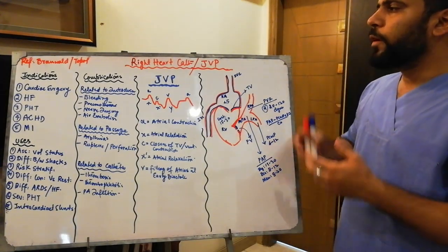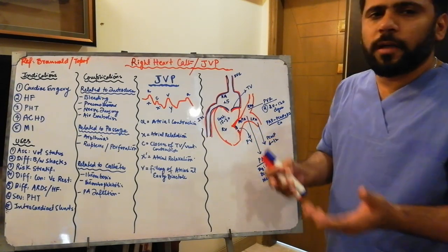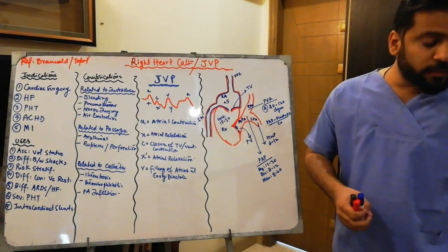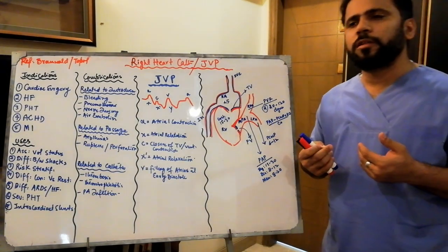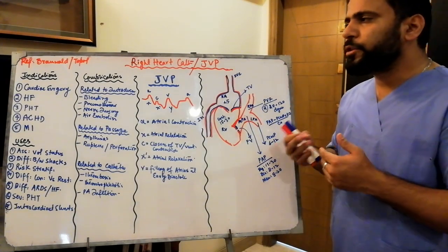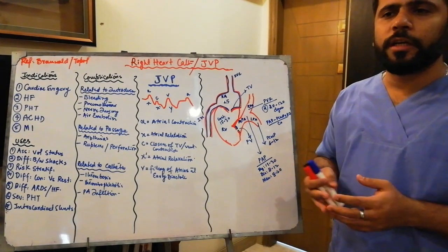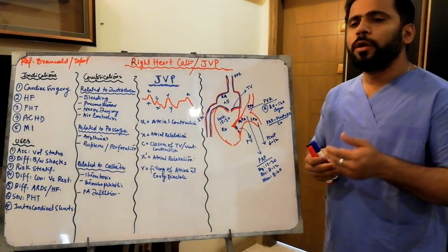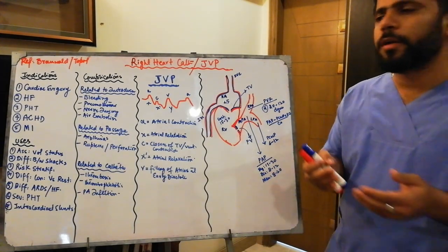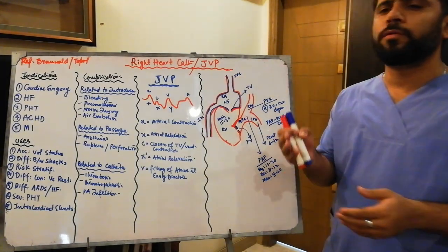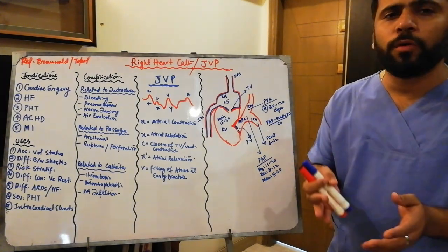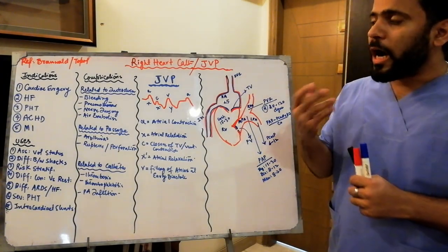First, what are the indications of right heart cath? In cardiac surgery, you need to evaluate pressures across the chambers and across the valves, pressure gradients across the valves. You also need to calculate cardiac output, PVR, and SVR. For all these things you need to do invasive hemodynamic monitoring — the right heart cath.